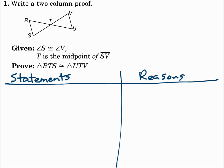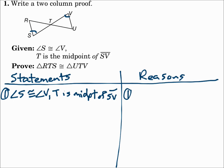Number one: write a two-column proof. Given angle S is congruent to angle V and T is the midpoint of segment SV, prove that triangle RTS is congruent to triangle UTV. As always, start with what you're given: angle S is congruent to angle V, and T is the midpoint of segment SV. The reason is that we were given that information. That gives us one pair of angles, but that's not enough to say the triangles are congruent.